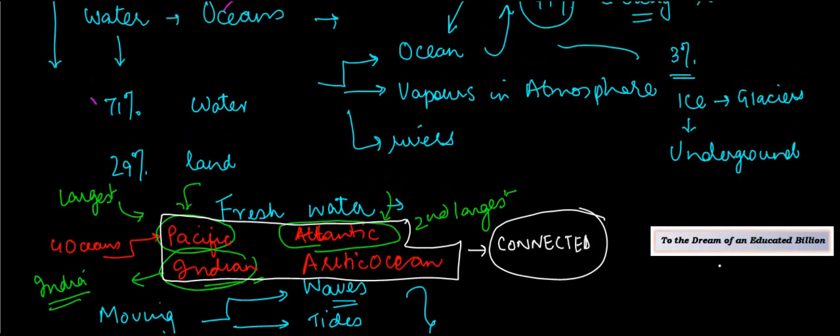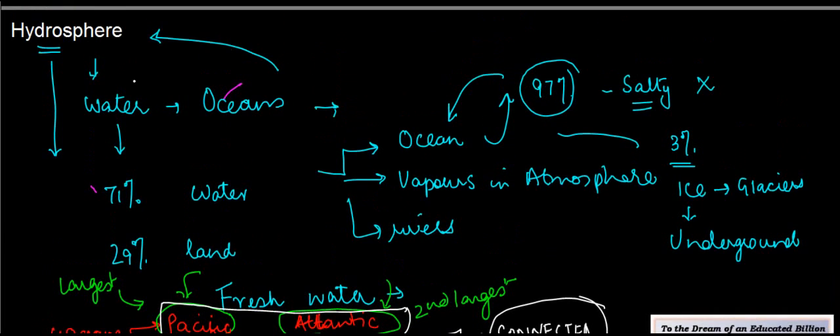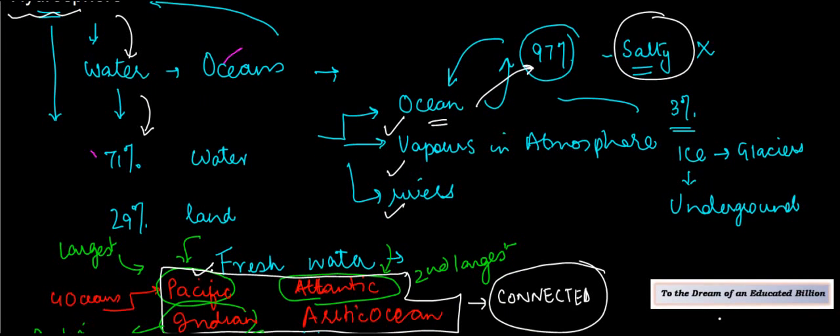So basically, we spoke about hydrosphere, which is nothing but the part of the Earth which is covered by water, which happens to be 71 percent. Out of the 71 percent, it could be divided into oceans, vapors and rivers. Oceans themselves are around 97 percent of the total water on Earth. But because it is salty, it cannot be used by humans. The key four oceans which we have are Pacific, Atlantic, Indian and Arctic Ocean.